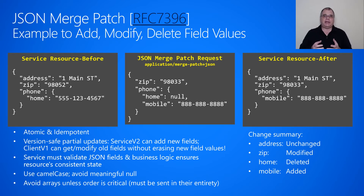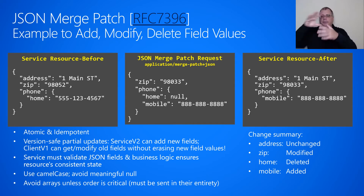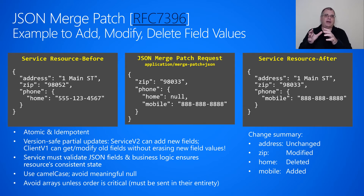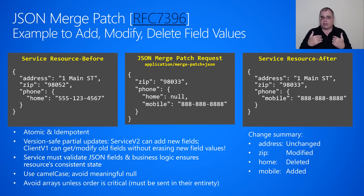Also, avoid arrays with JSON Merge Patch unless order is critical. The reason to avoid them is because it's more cumbersome for the client — the client has to read the entire array, do whatever it wants to the array, and then send the array back in the desired order to the service. Whereas with JSON Merge Patch, I could just say I want to make the zip code 98033, without knowing what it was beforehand.